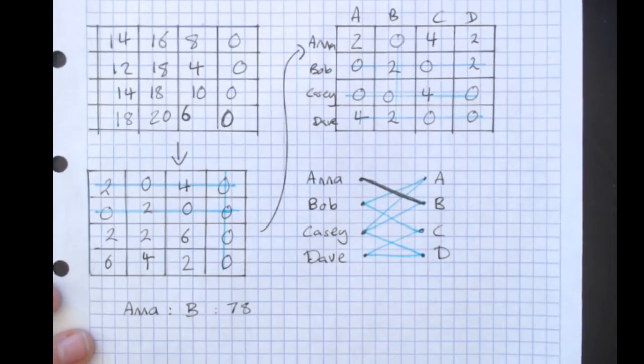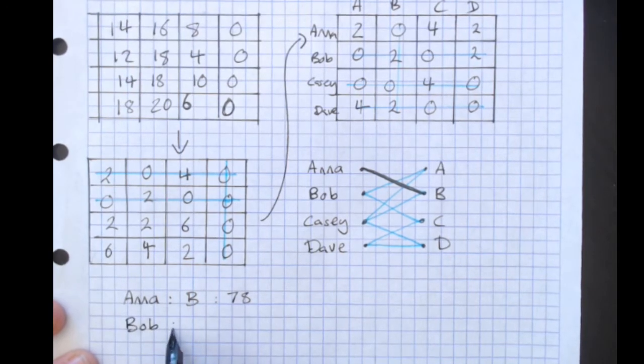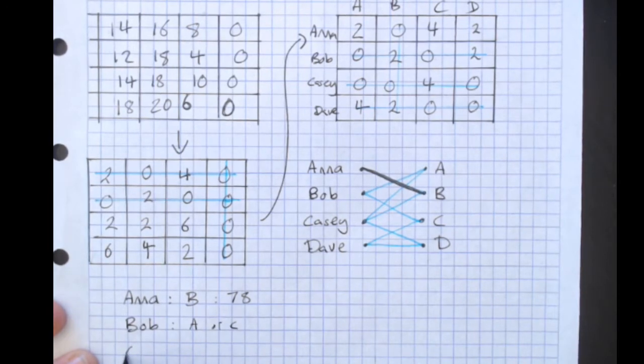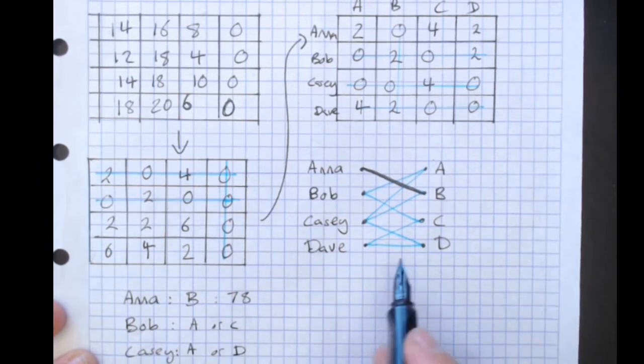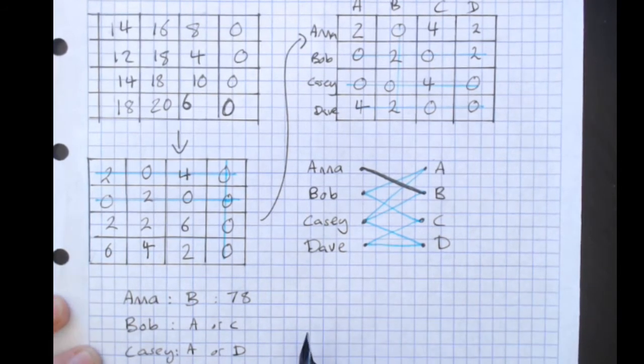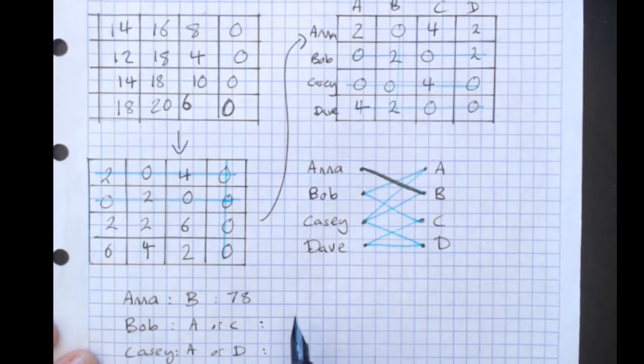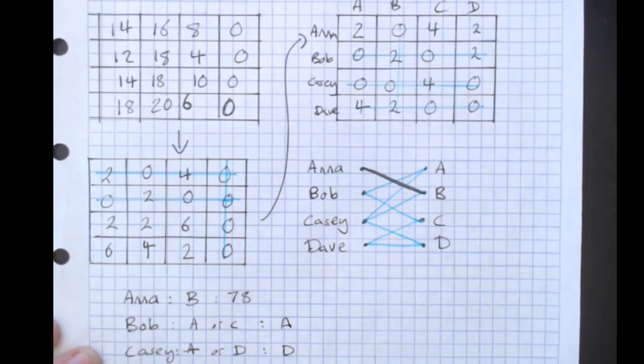So then Bob can do A or C. Casey can do A or D. Dave can do C or D. So really, you just need to make a decision. Let's have Bob doing A, Casey doing D, Dave doing C.